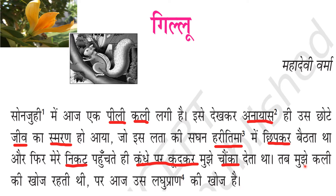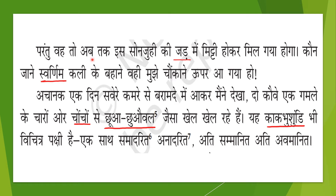At that time, she used to search for that yellow bud, knowing he would be hiding behind it. But today the authoress keeps searching for that tiny soul — laghu pran means that tiny soul. She thought that by now that tiny soul would have become mud and mixed with the roots of the Sonjuhi plant. Jad means root; Mitti means mud. This means that Gillu is no more — it has already died.